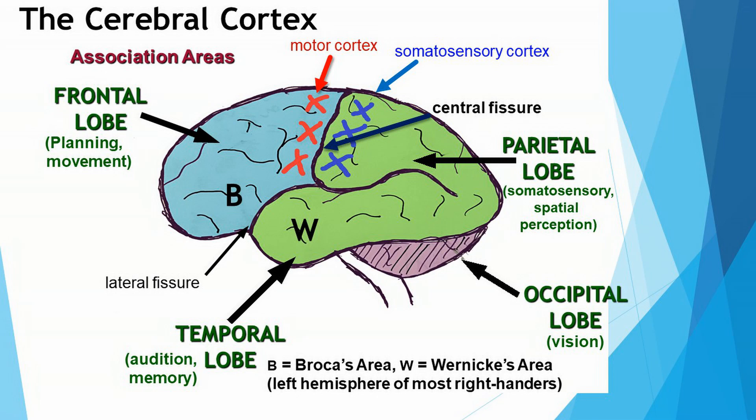Understanding how the brain allows us to produce speech is more complicated, but these are the two speech centers that I absolutely want you to know: Broca's and Wernicke's areas. I also want you to know that these structures, these speech centers, are located in the left hemisphere of most right-handed individuals.